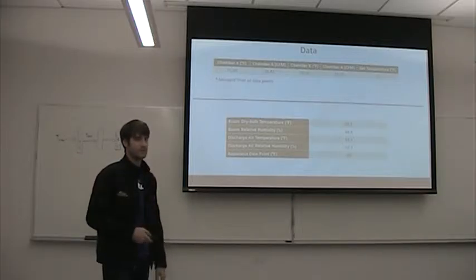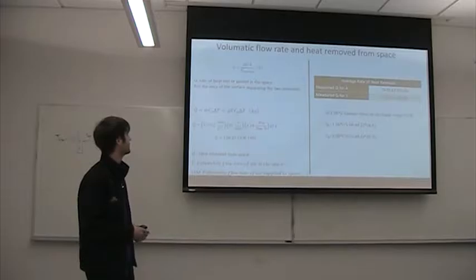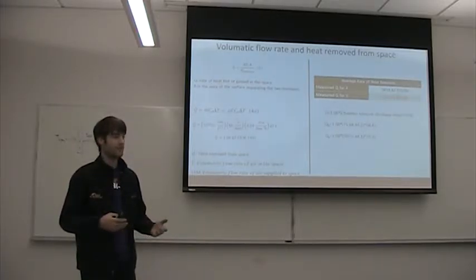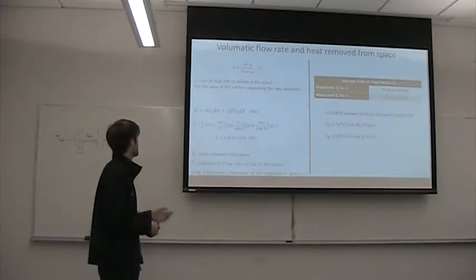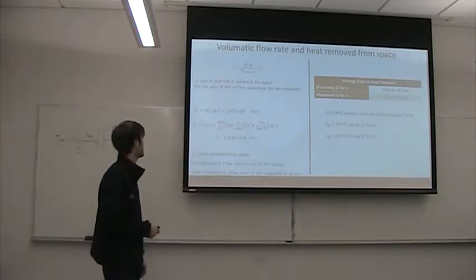And then our control, our measurements that we took also were the dry-bulb temperature of the room, which was 68.8 degrees. The relative room humidity was 34.8%. Discharge air temperature, this is the air straight out of the air conditioner, is 44.1 degrees, with a relative humidity of 57.7%. And then apparatus dew point is 44 degrees.